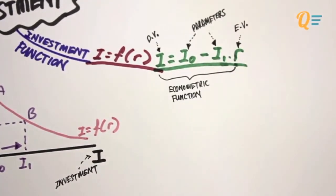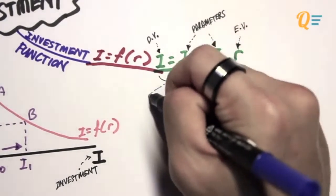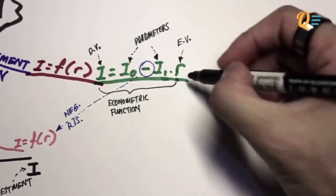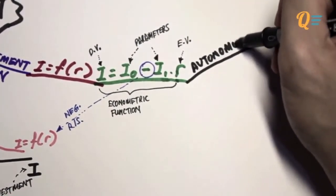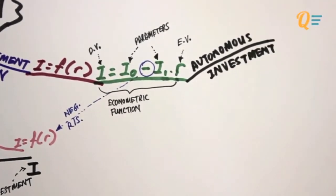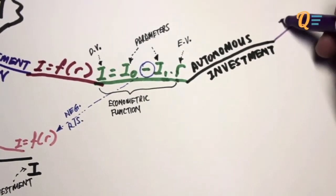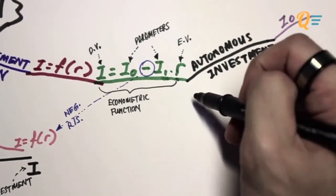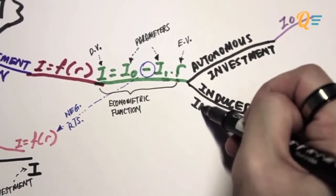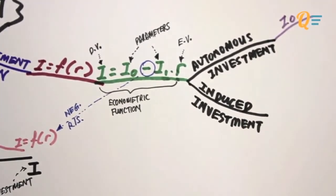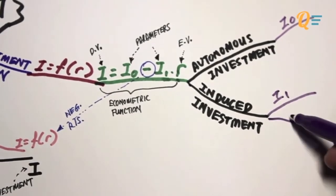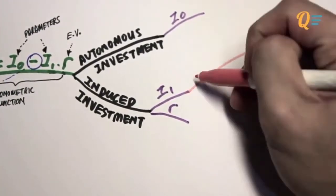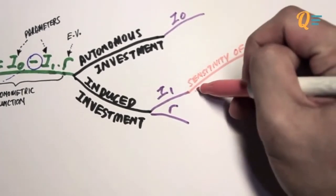Just like consumption, I can break down the investment function into two parts. The first part is autonomous investment — the amount of investment not affected by any explanatory variable like real interest. The second part is induced investment — the amount of investment affected by the real interest rates, made up of I1 multiplied by the real interest rate. I1 is simply the sensitivity of investment to the level of real interest rates in the economy. This parameter is somewhat similar to the marginal propensity to consume, but it's about investment rather than consumption.